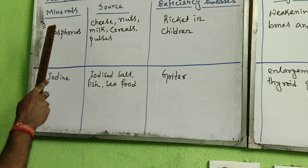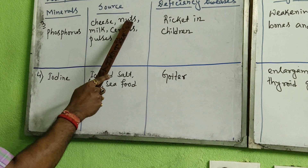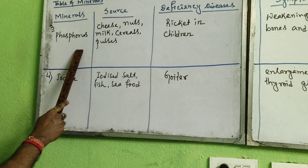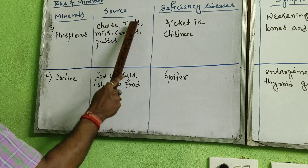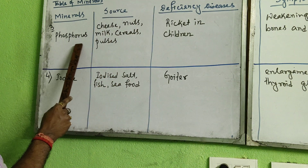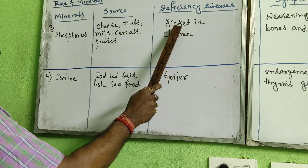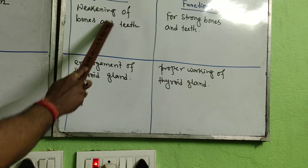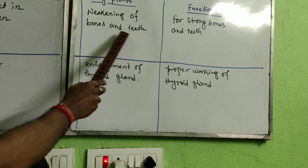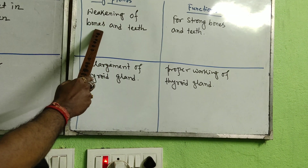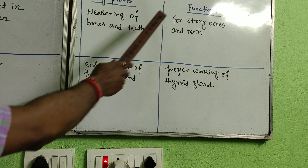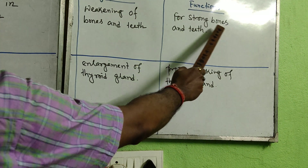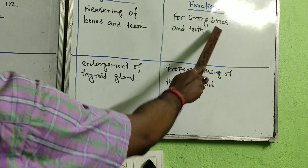The third mineral is phosphorus. Its sources are cheese, nuts, milk, cereals, and pulses. If your body lacks phosphorus, it may face the deficiency disease called Rickets, which is basically for children. The symptom of Rickets is weakening of bones and teeth — for children specifically, their bones and teeth become weak. The function of phosphorus is for strong bones and teeth; sufficient phosphorus is needed especially for children to keep their bones and teeth strong.